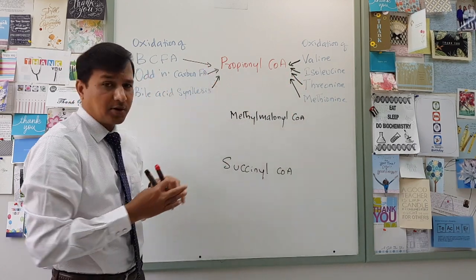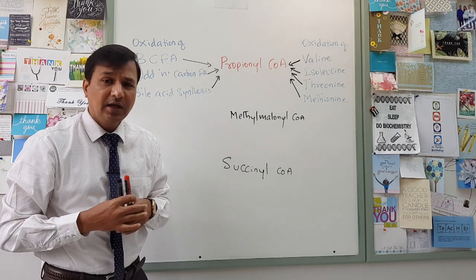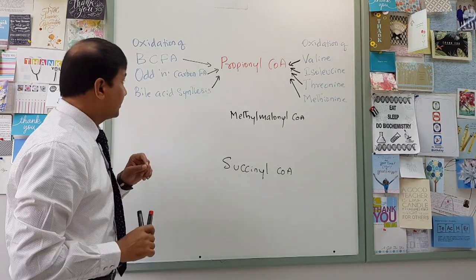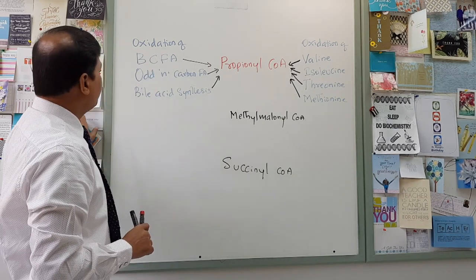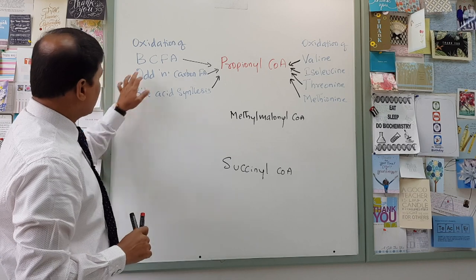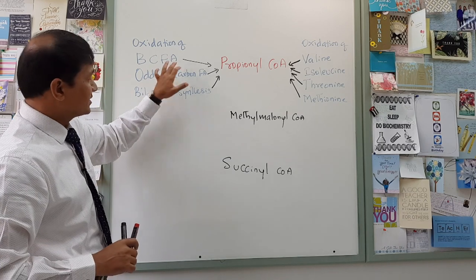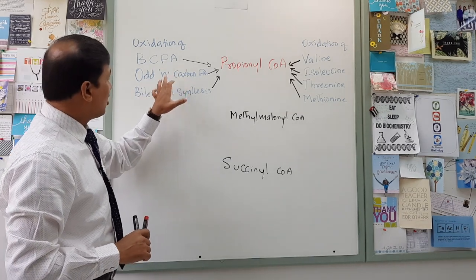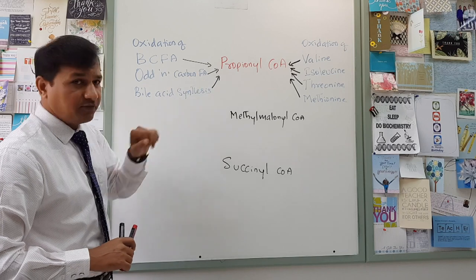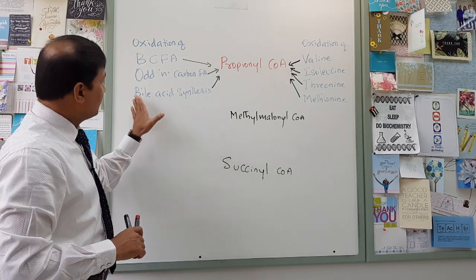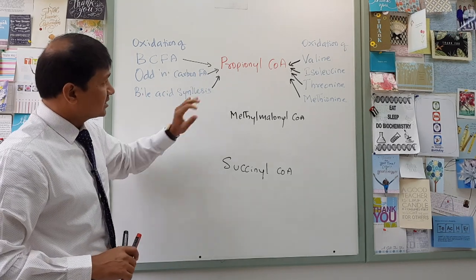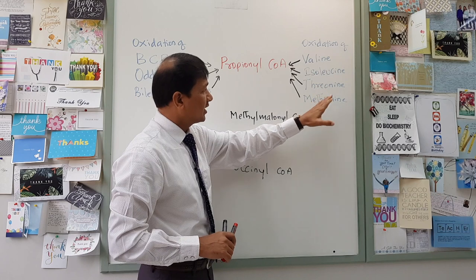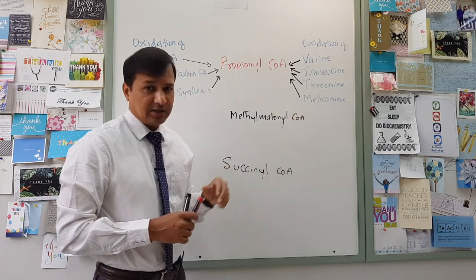These are the sources of Propionyl-CoA in our body: oxidation of BCFA (branched chain fatty acid), that is phytanic acid; oxidation of odd-number carbon fatty acids; bile acid synthesis; and oxidation of valine, isoleucine, threonine, and methionine.